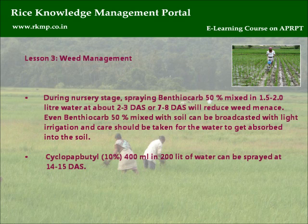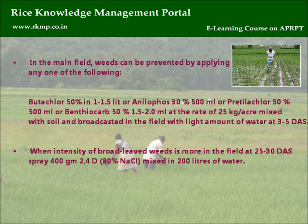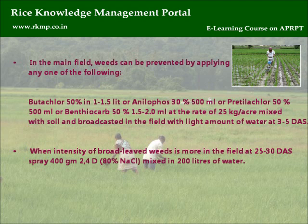Lesson 3: Weed management. Cyclopa butyl 10%, 400 ml in 200 liters of water, can be sprayed at 14-15 DAS. In the main field, weeds can be prevented by applying any one of the following herbicides.